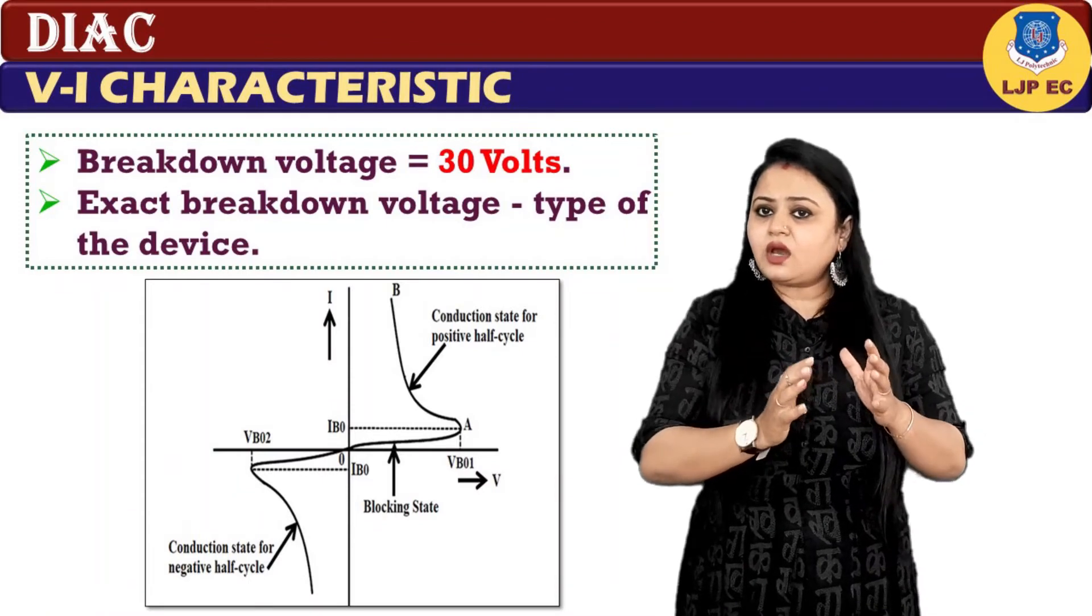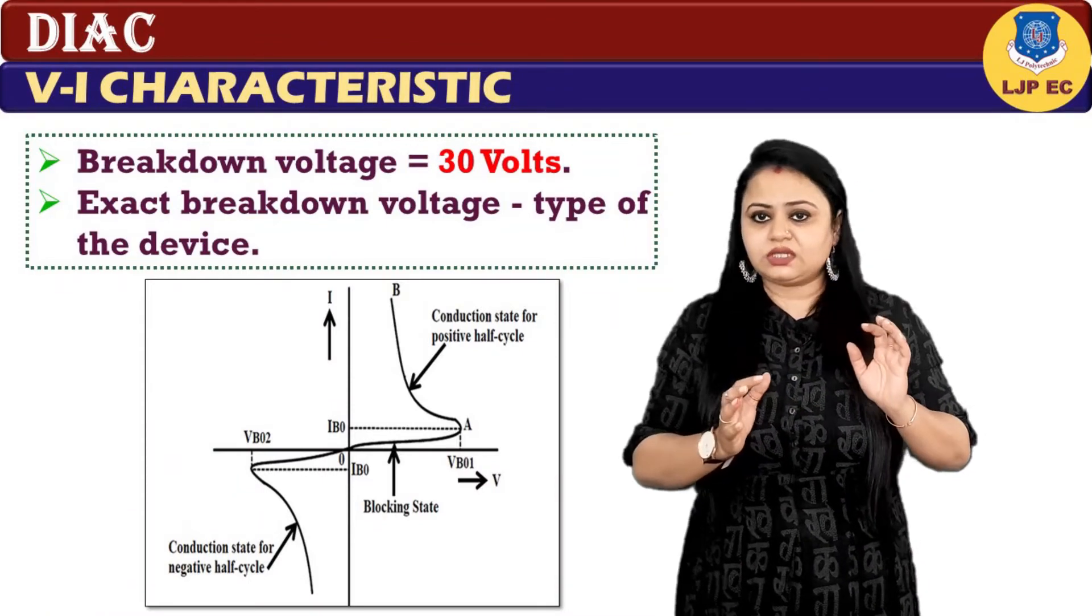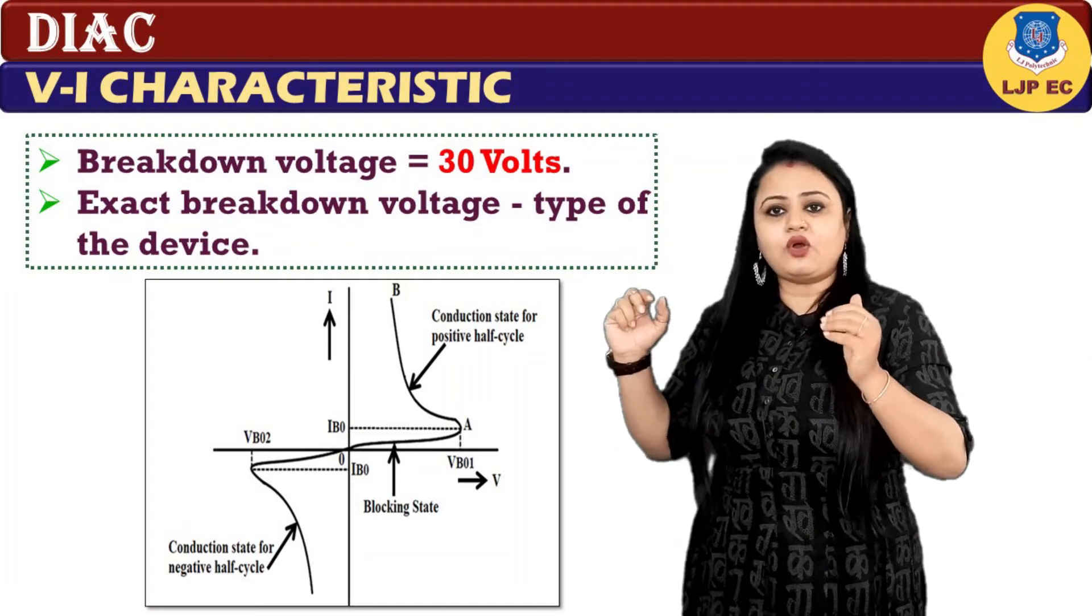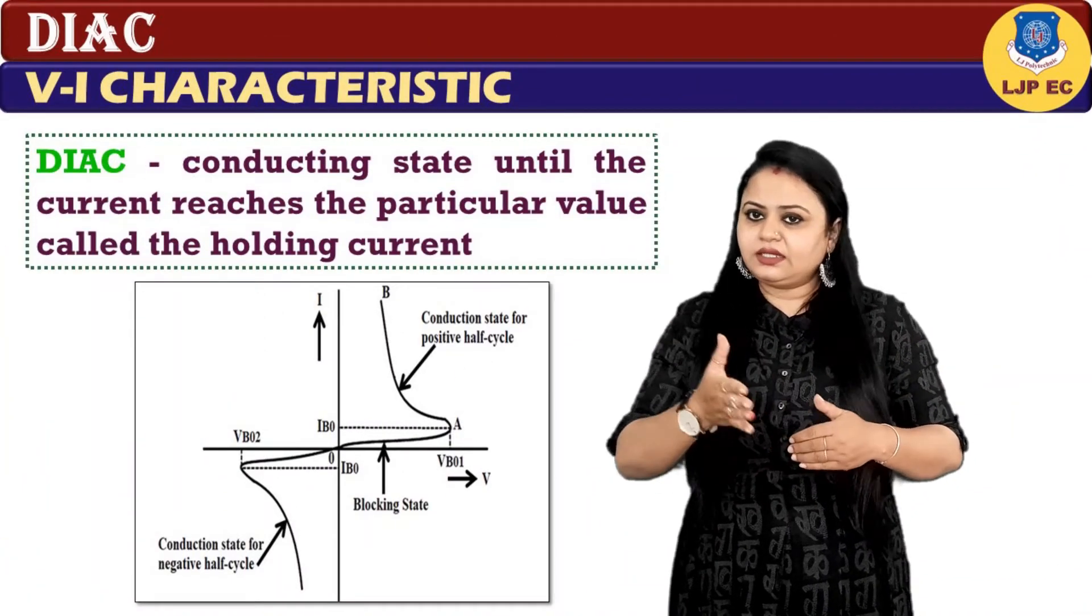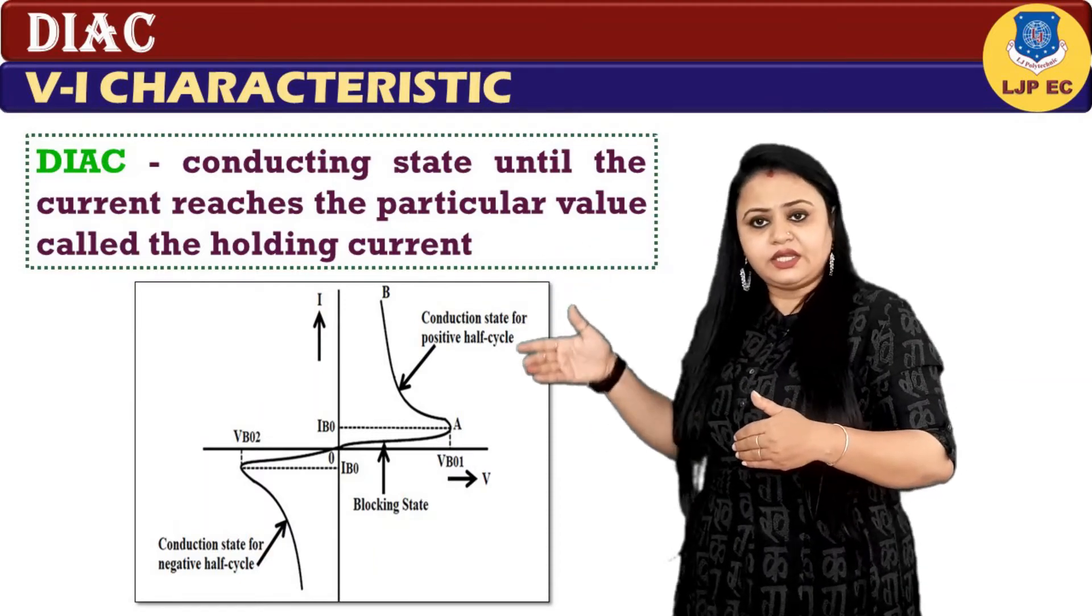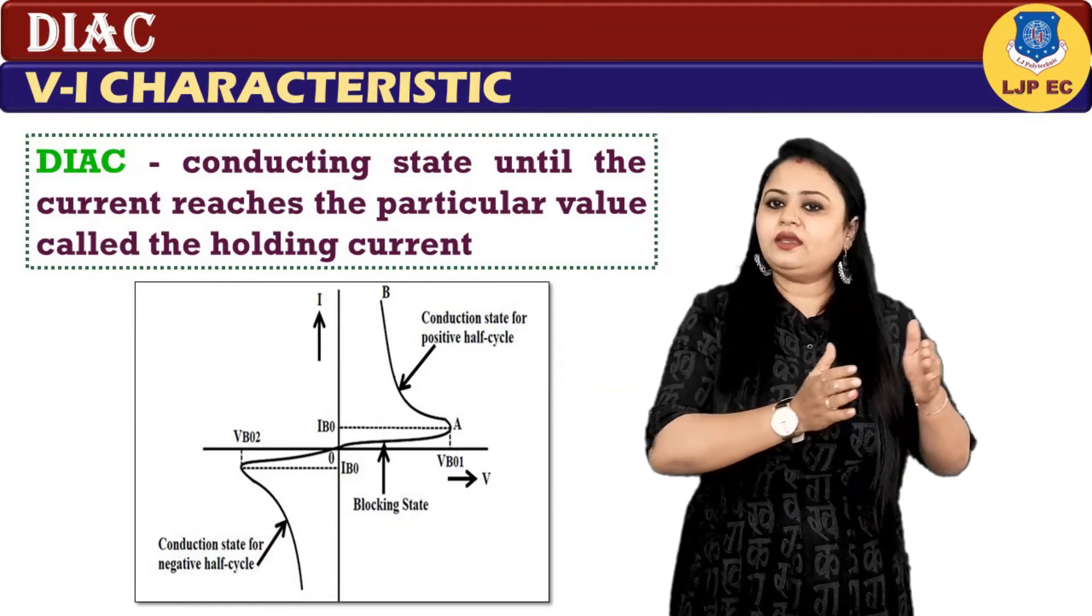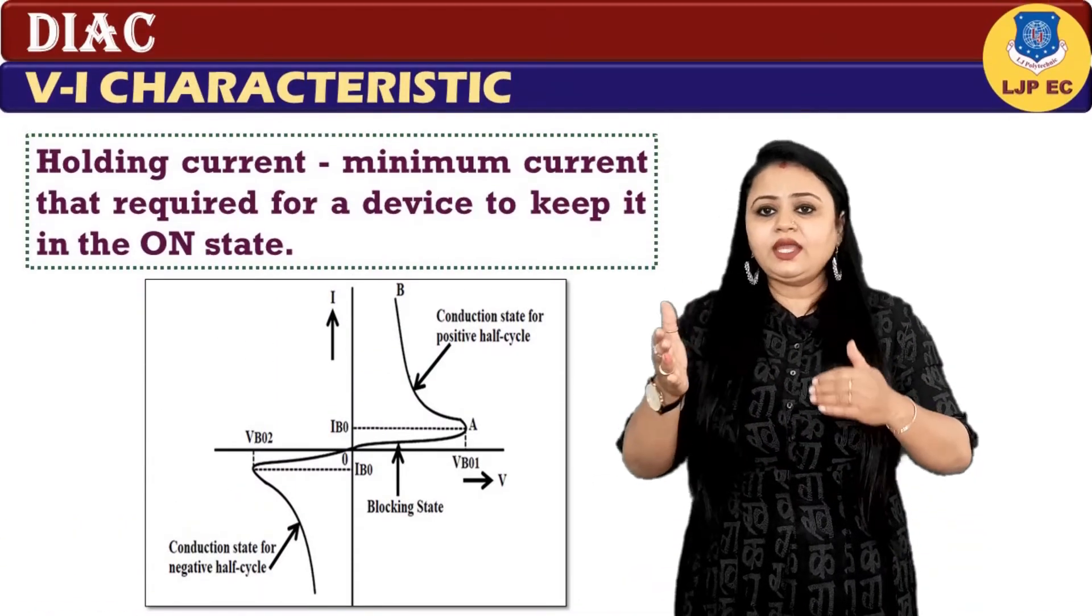Most of the DIACs will be having a breakdown voltage around 30 volts. The exact breakdown voltage will be based on the type of device. The DIAC will be in conducting state until current reaches the particular value called holding current, where holding current is the minimum current that is required for the device to keep it in the on state.